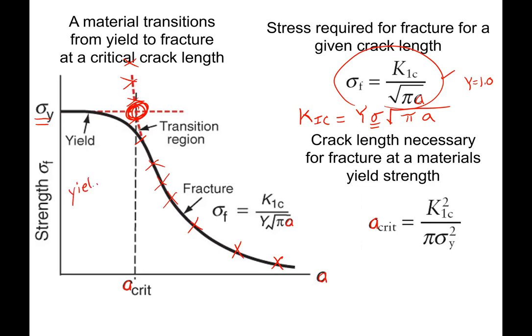In that region the crack tip will blunt out, so we won't have those high stress intensities anymore — in front of the crack tip we'll have a yielding zone. That's the idea of a critical crack length.